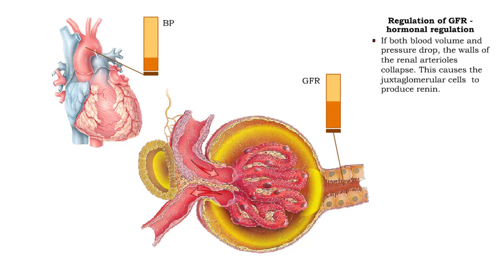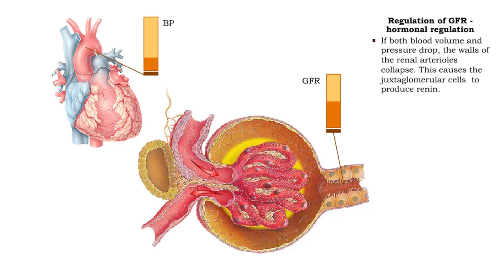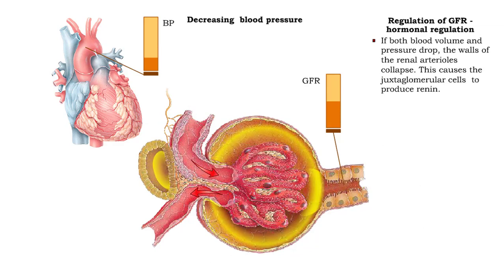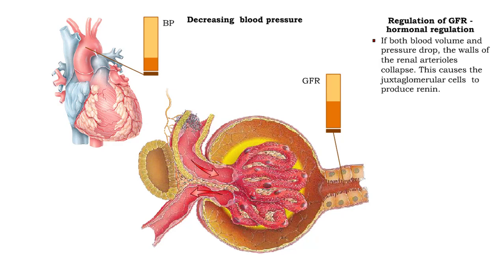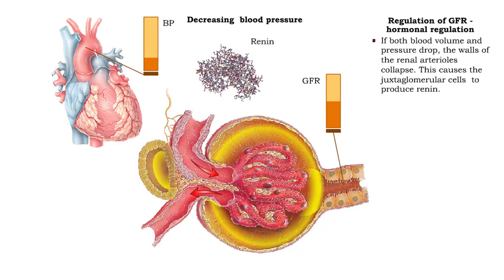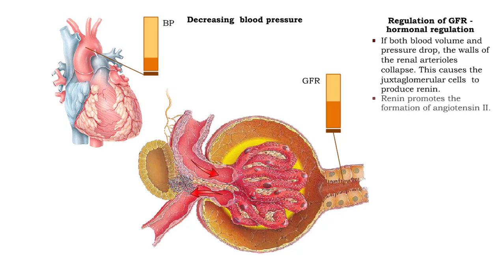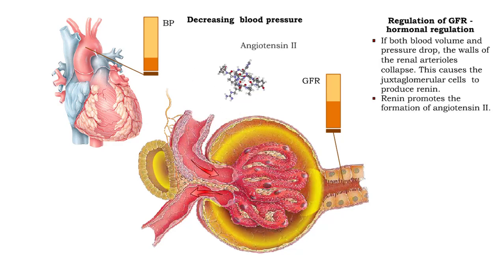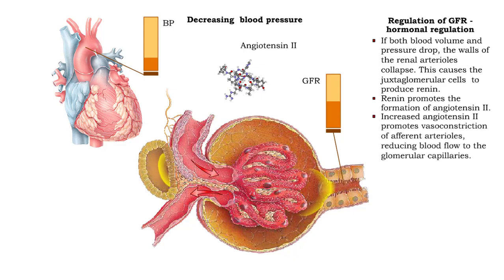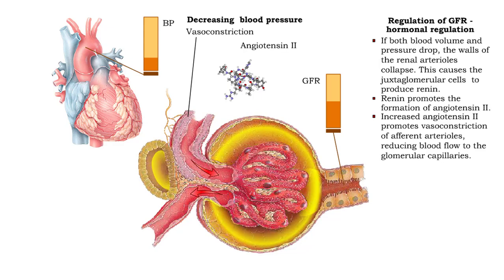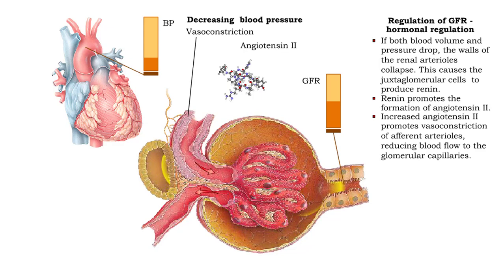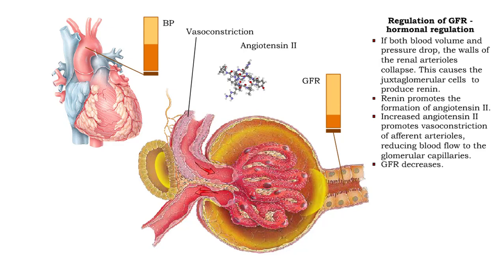If both blood volume and pressure drop, the walls of the renal arterioles collapse. This causes the juxtaglomerular cells to produce renin. Renin promotes the formation of angiotensin 2. Increased angiotensin 2 promotes vasoconstriction of afferent arterioles, reducing blood flow to the glomerular capillaries. Glomerular filtration rate decreases.